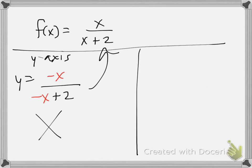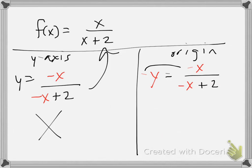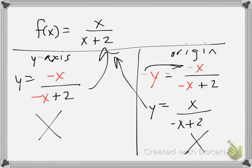Let's try origin symmetry. We make y negative and x negative. Moving the negative to the numerator on the other side gives x over negative x plus 2. Is this identical to what we started with? The answer is no. So here's an example where we have neither y-axis symmetry nor origin symmetry.